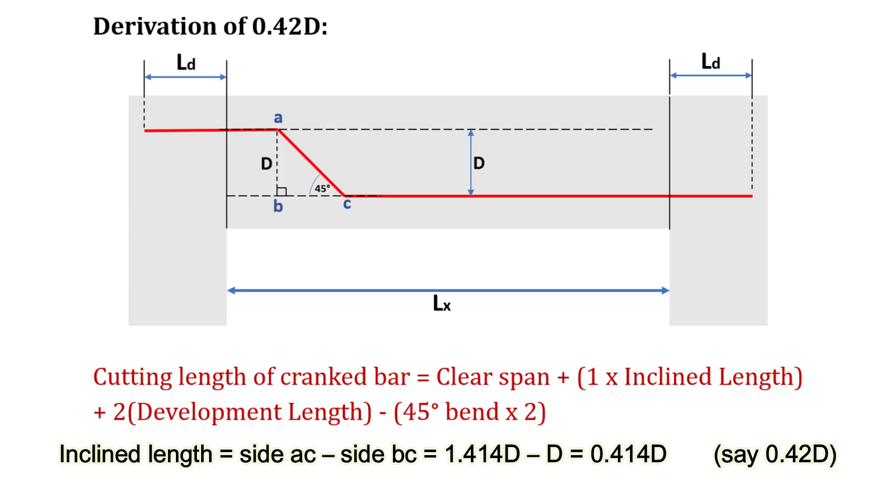That's how we get the inclined length of a cranked bar which is equal to 0.42D. I hope this video has helped you to understand the concept of cranked bars and how to derive the formula for calculating the inclined length of a bent up bar.